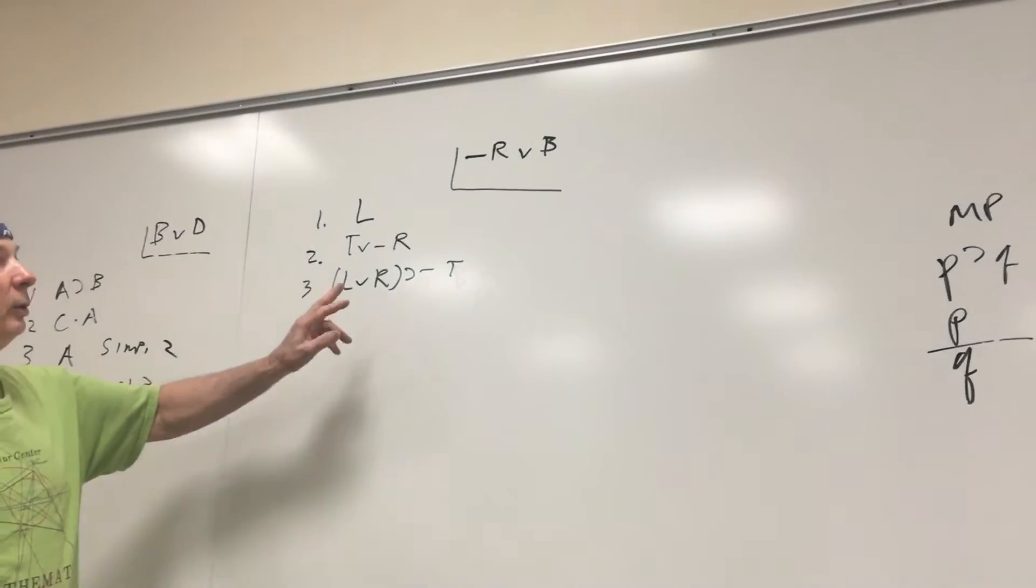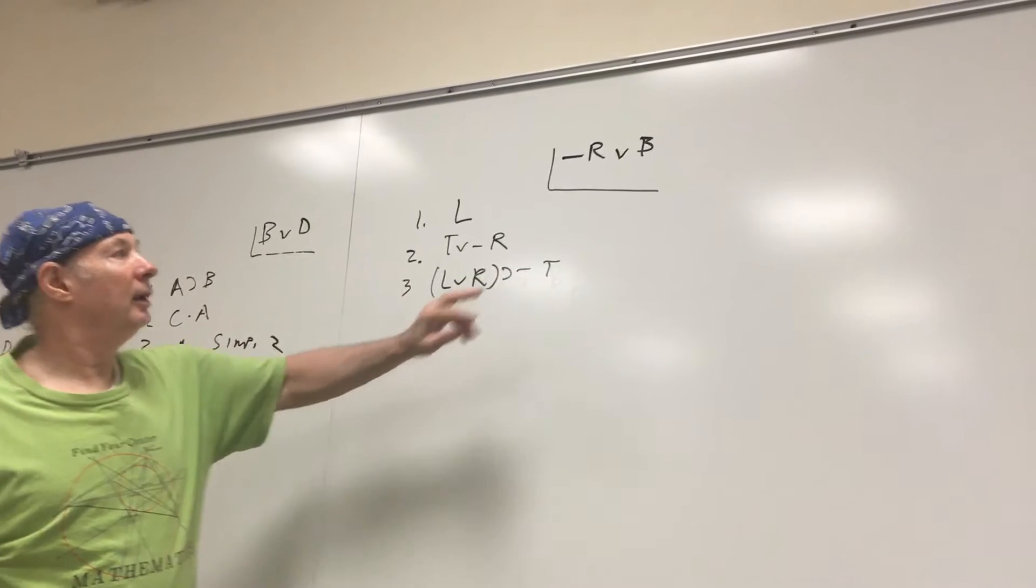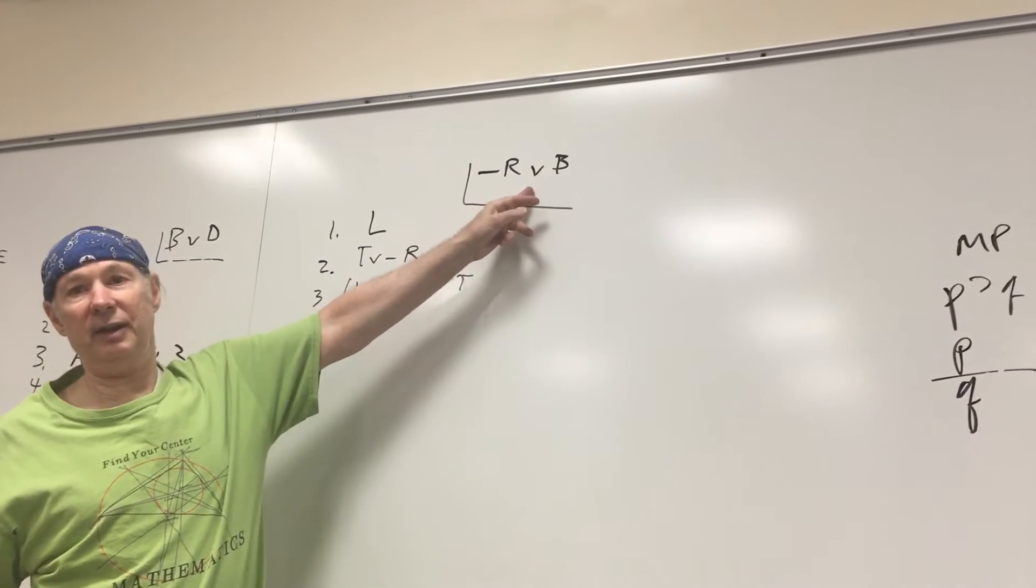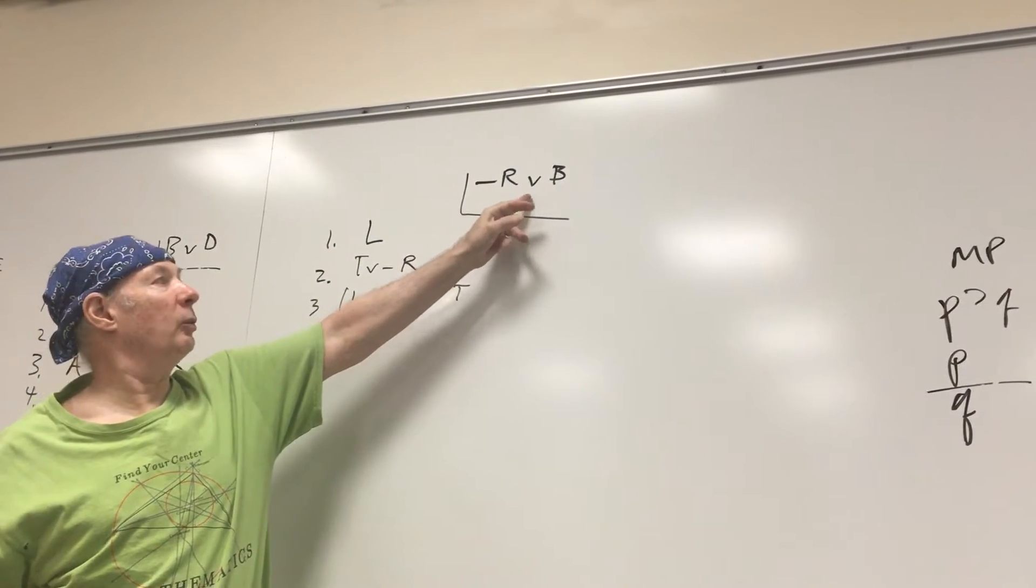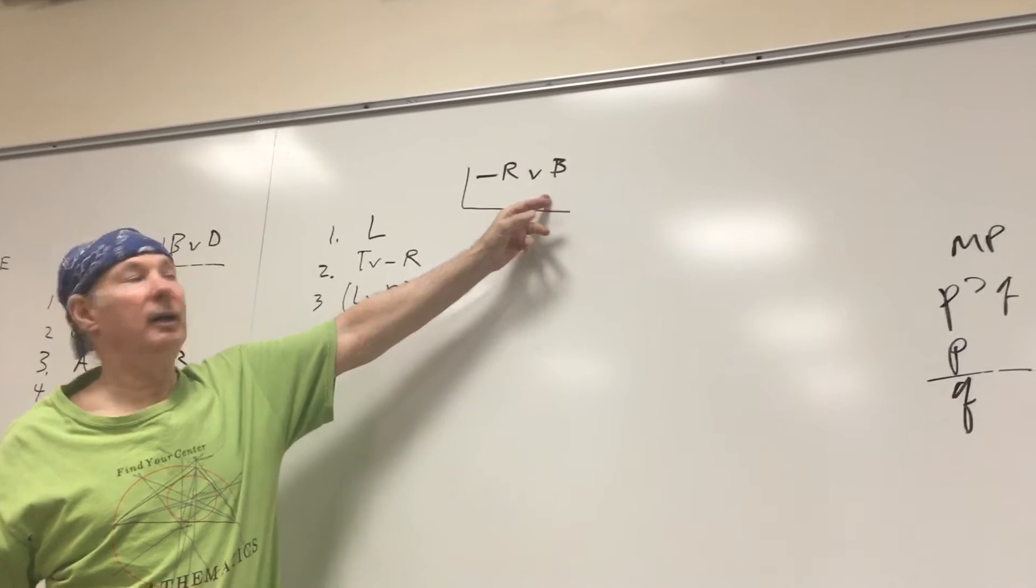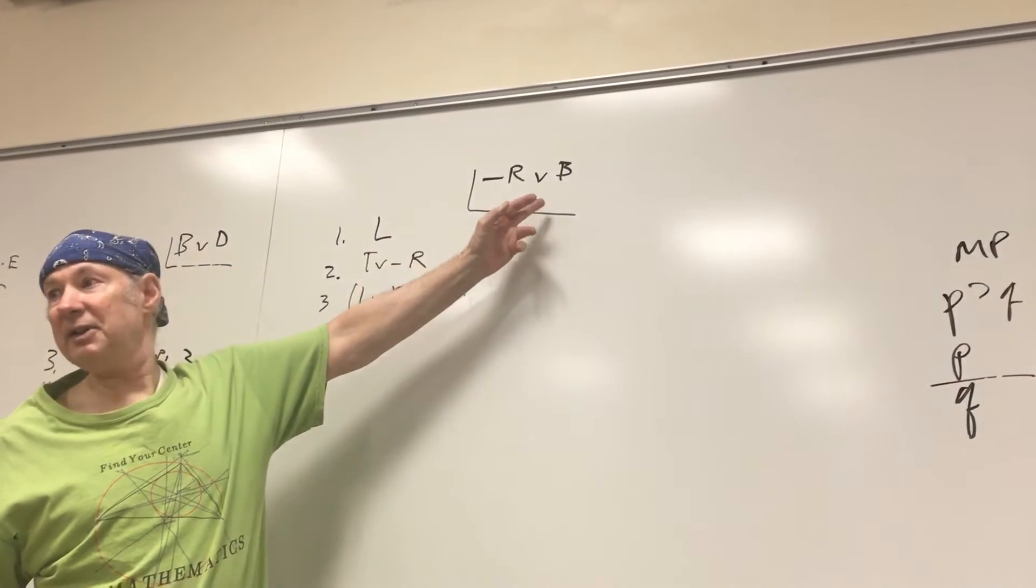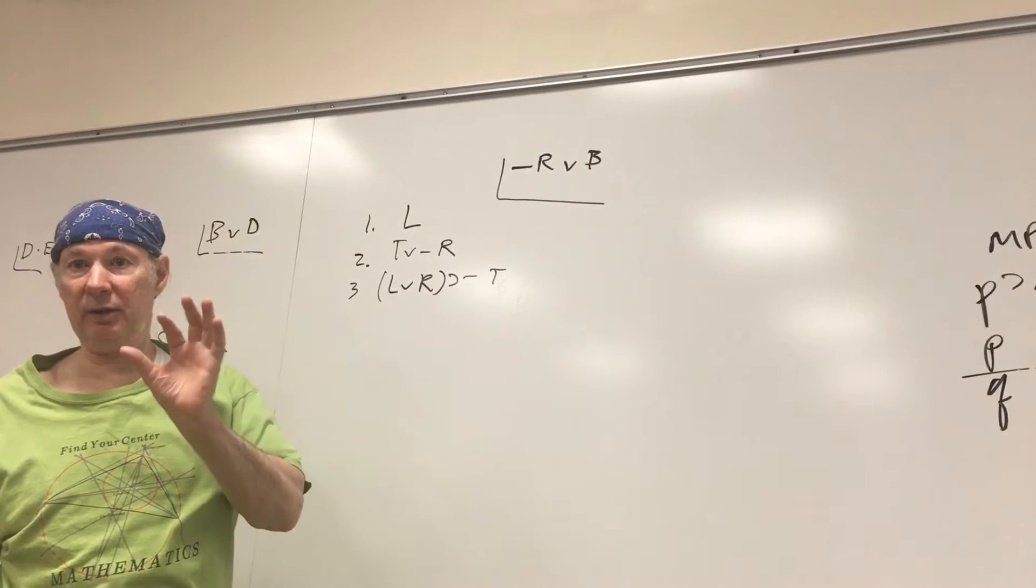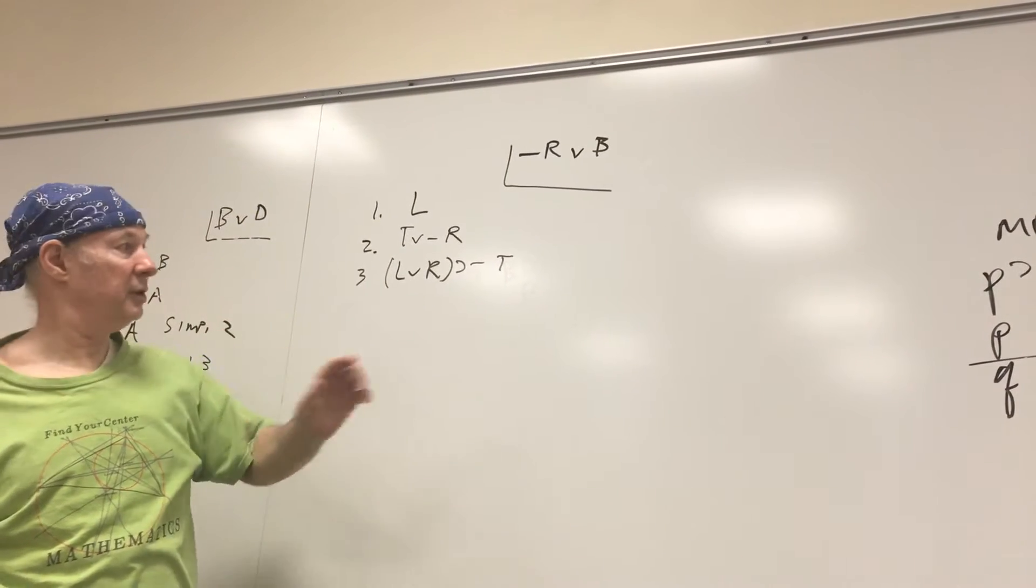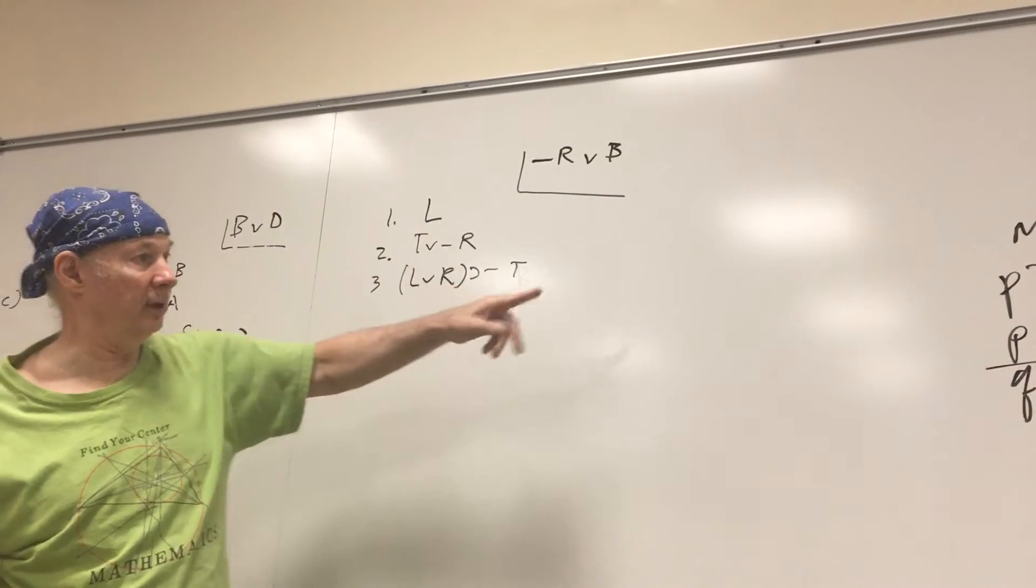Okay, so now we're going to work on this problem. Once again, this looks strange. Squiggle R wedge B. And it looks strange because it doesn't look like it's anything that is in the conclusion of one of the rules unless it's actually also in the premises.